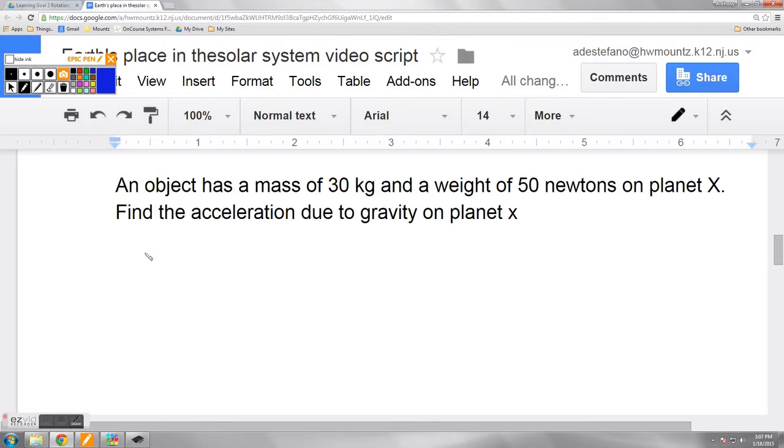In this next problem, an object has a mass of 30 kilograms and a weight of 50 newtons on planet X, meaning it's an unknown planet. We're looking for the acceleration due to gravity on planet X. So we start out by writing the formula, W equals M times G.